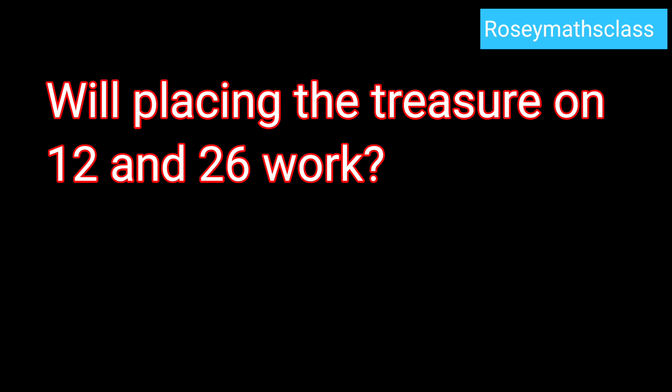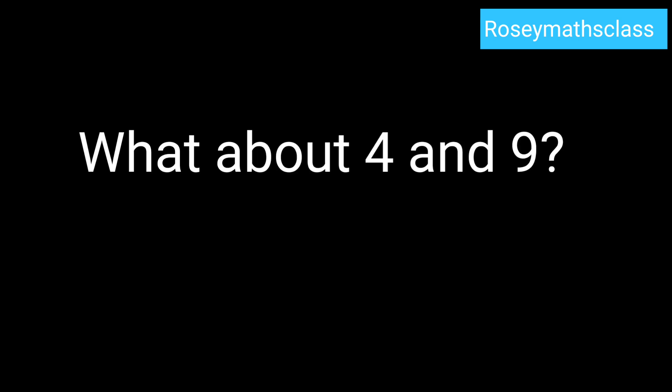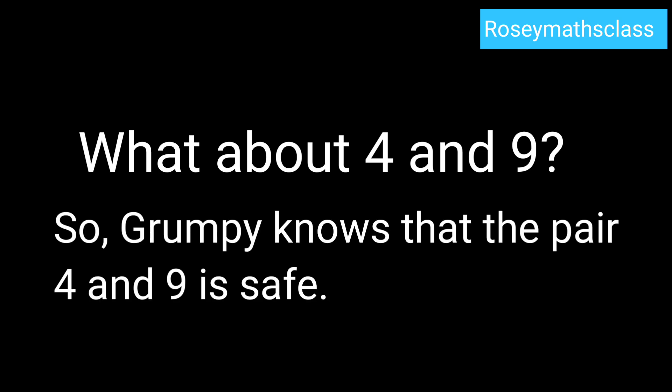If he keeps the treasure on 12 and 26, that would not work because if the jump size is 2, then Jumpy will reach both 12 and 26. What about 4 and 9? Jumpy cannot reach both using any jump size other than 1, and the rule is that a jump size of 1 is not allowed. So the pair 4 and 9 is safe. That means 4 and 9 are co-prime numbers.